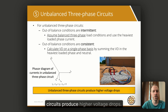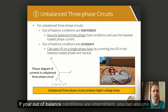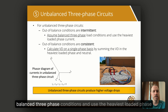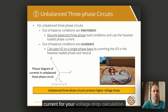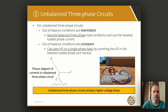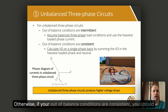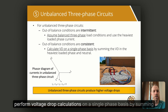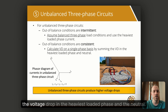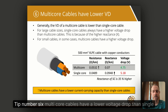Tip number five: unbalanced three-phase circuits. Unbalanced three-phase circuits produce higher voltage drops. If your out-of-balance conditions are intermittent, you can assume balanced three-phase conditions and use the heaviest loaded phase current for your voltage drop calculation. Otherwise, if your out-of-balance conditions are consistent, you should perform voltage drop calculations on a single-phase basis by summing the voltage drop in the heaviest loaded phase and the neutral.